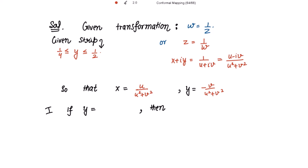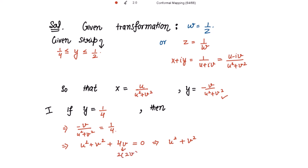Now, since y is greater than or equal to 1/4, let's take y = 1/4. Substituting into the expression, we get -v/(u² + v²) = 1/4. Simplifying gives u² + v² + 4v = 0. To complete the square for v, since 4v can be seen as twice 2·v, we add and subtract 2². This gives u² + (v + 2)² = 4.